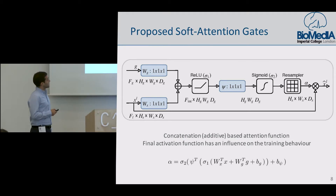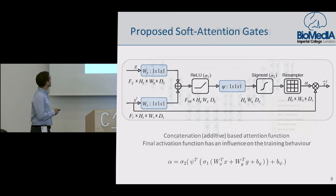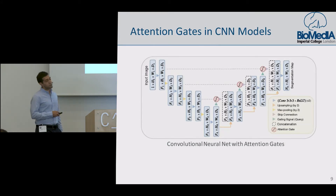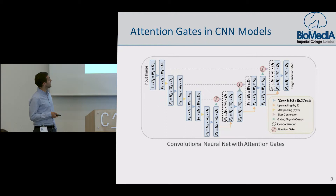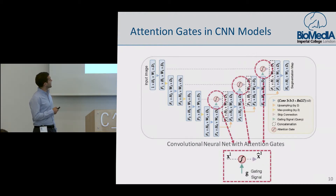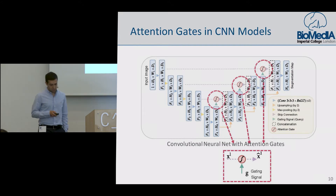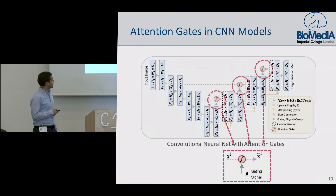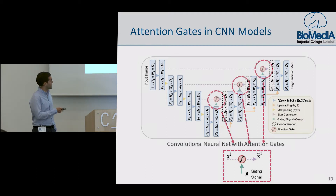Once we obtain the attention coefficients, we scale our input feature maps with these alphas and then pass them forward. We chose a U-Net architecture in our experiments, and particularly the attention gates are placed on the skip connections. We could choose another architecture like a full convolutional network — this is totally independent of the model being used. For a given input feature map, the gating signal is obtained from the coarser scale, and that way we eliminate the background information and pass only the features corresponding to relevant areas — basically the salient image regions.